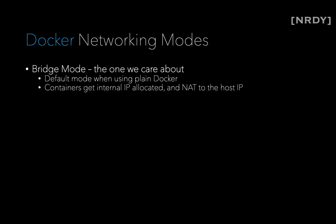When you first fire up Docker you're going to have a few networking modes available for your containers. The question is how do my containers get to the outside world, and there are a few ways to do it in Docker. The first and the default mode is called bridge mode. This is a default network where it gives an internal IP assignment to your containers and then NATs from that range to the IP of the host that is hosting the containers.